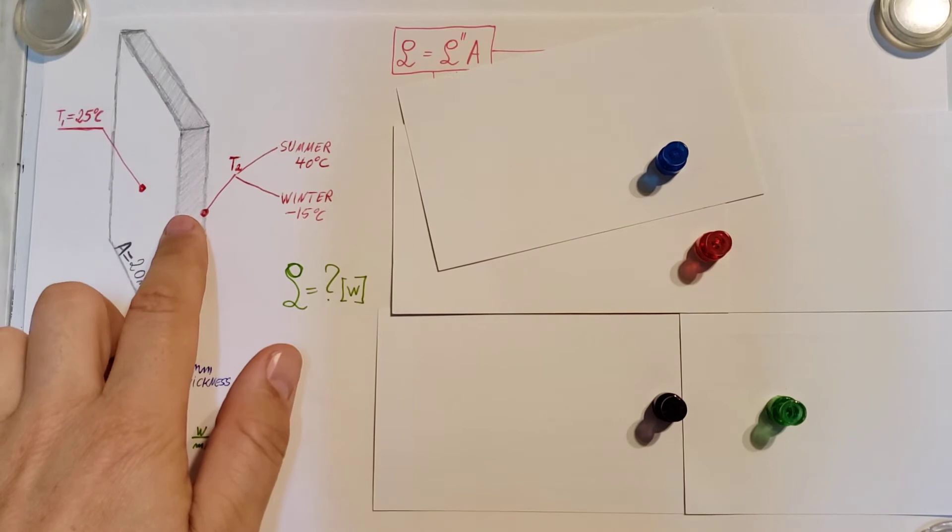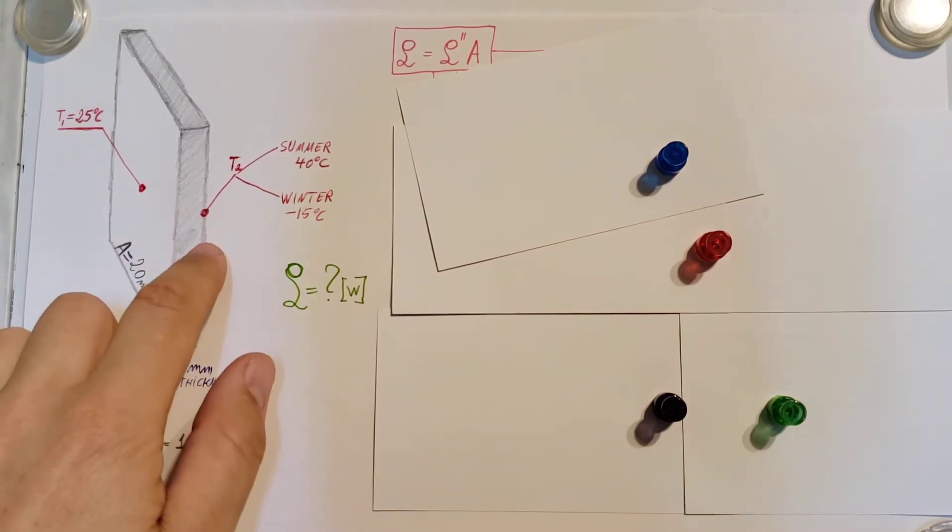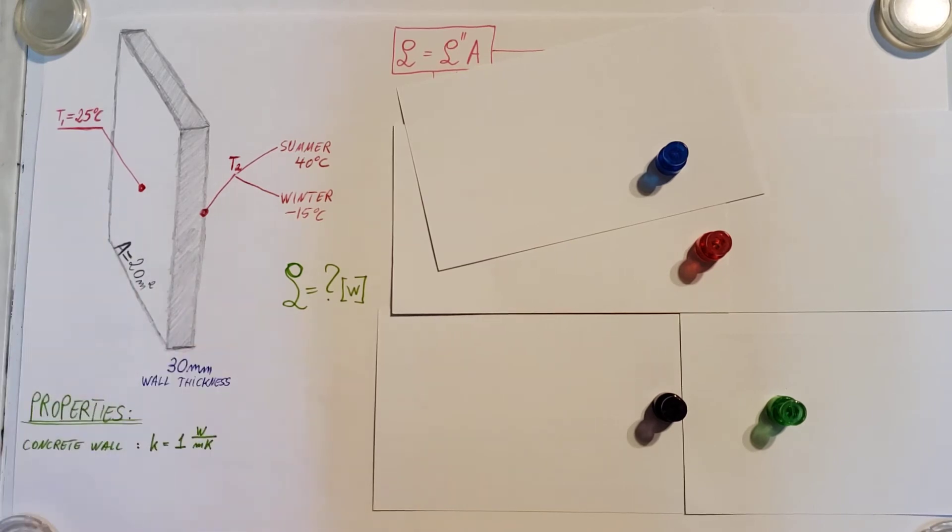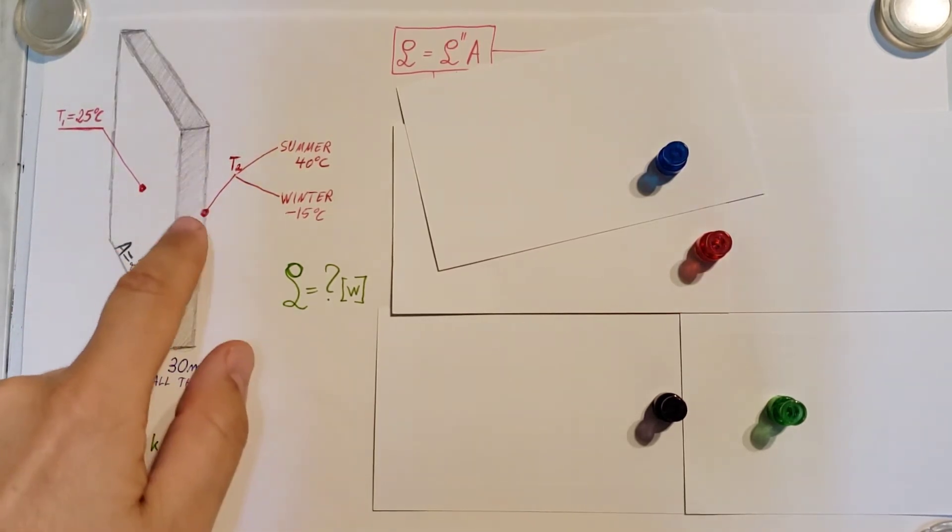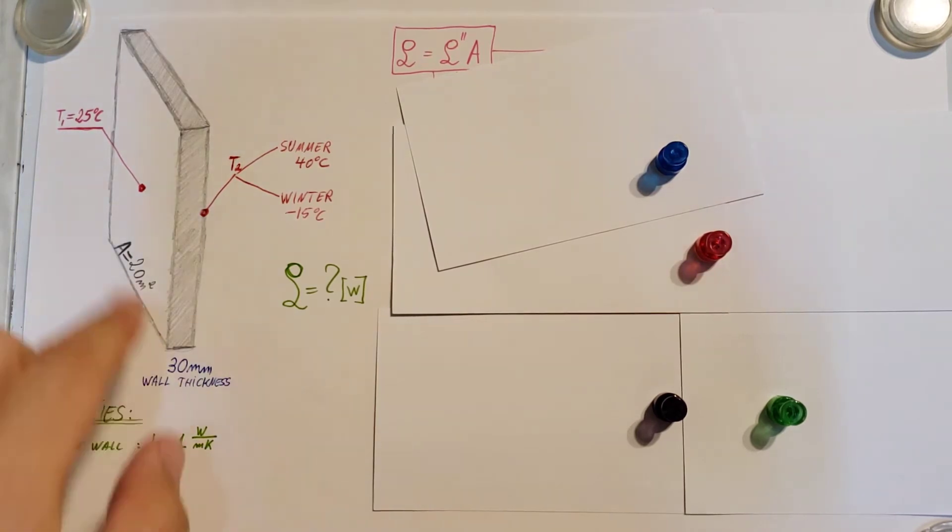The convection or radiation that's happening on the two sides, ignored. They only gave us information for K. So we right away should know that that belongs to conduction. So that's what we're going to be dealing with over here.